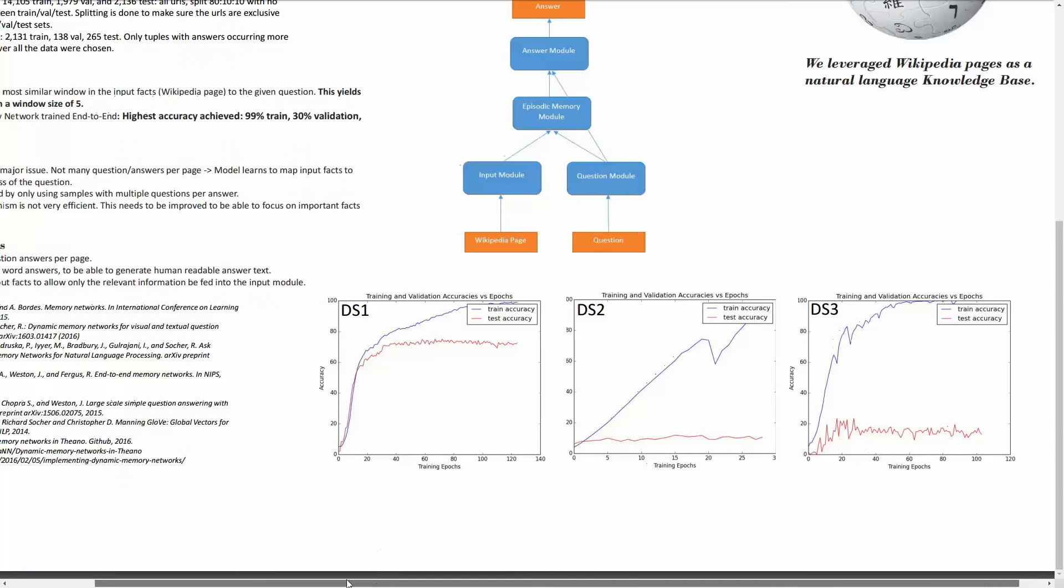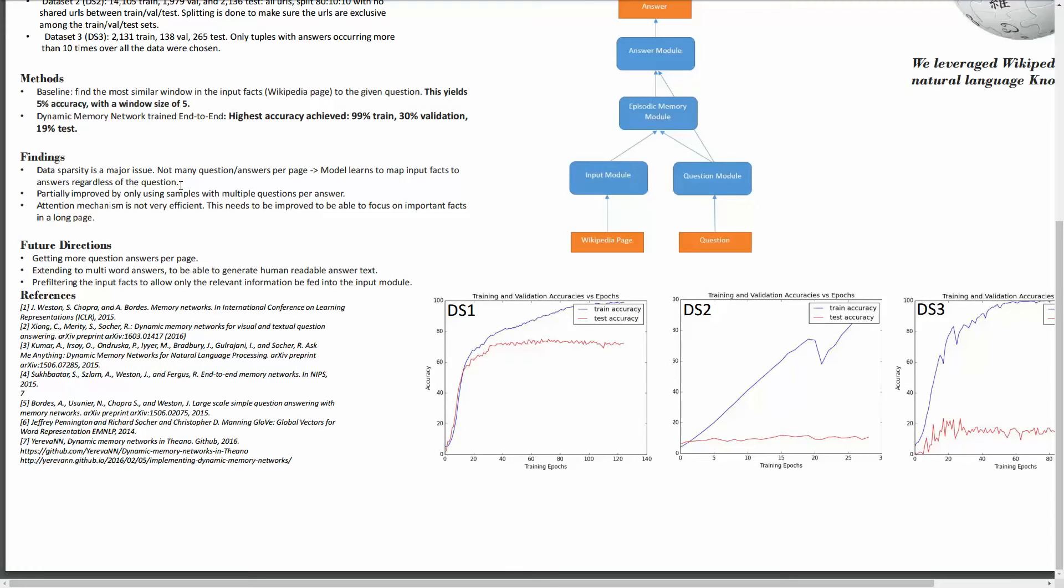In terms of the findings, I think one important issue is that the data is part of the issue. It is a major issue, and we don't have much question-answer per page and it causes the model to overfit and not learn much from the input facts. We could partially improve that by choosing the answers which have more than 10 questions. However, this still needs some improvement.